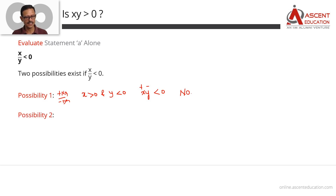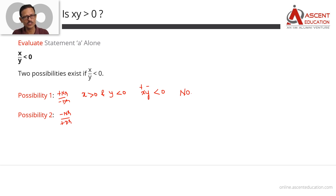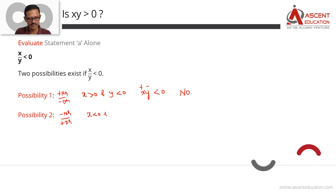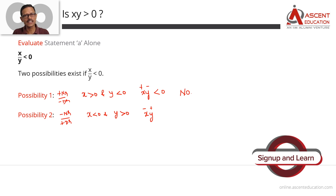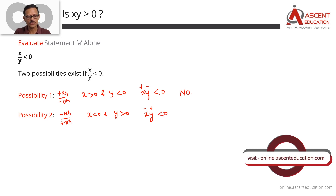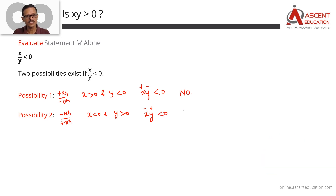Possibility 2: the numerator could be negative and the denominator will be positive. So essentially X is negative and Y is positive. What will be the product X into Y? X is negative, Y is positive. The product of a negative and a positive number is negative. So X into Y is negative, and the answer to the question continues to be no.